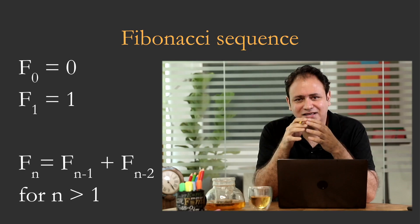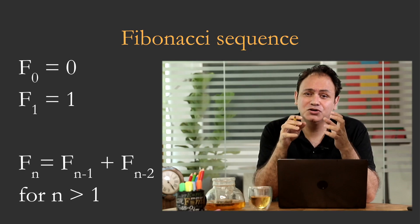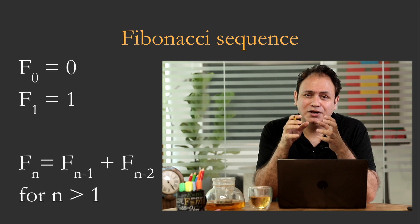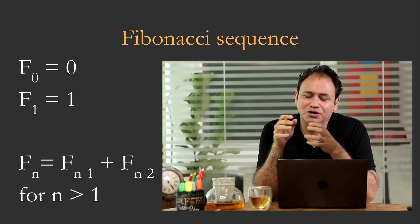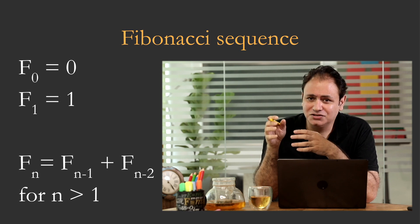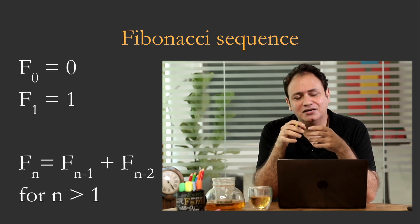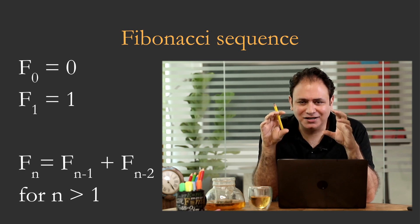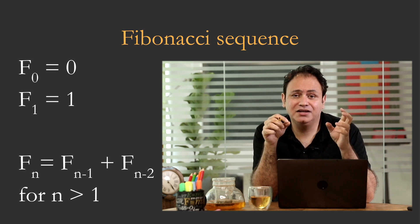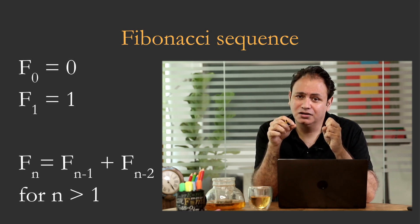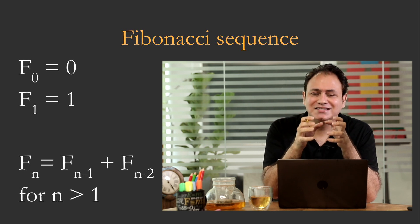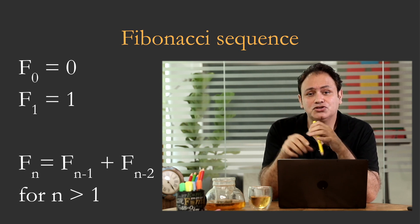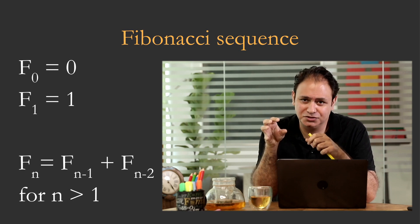The Fibonacci sequence has the following definition. f(0) is 0 for n equal to 0, f(1) is 1 for n equal to 1. And for all n greater than 1, there's a relationship which says f(n) is equal to f(n-1) plus f(n-2). So f(n) is essentially the sum of the previous two Fibonacci numbers.